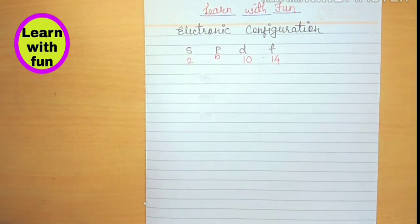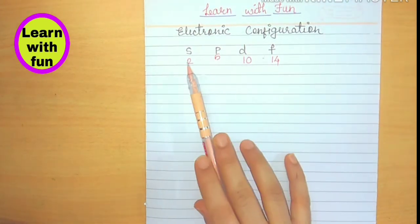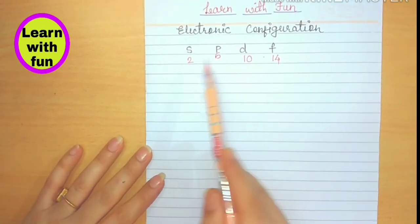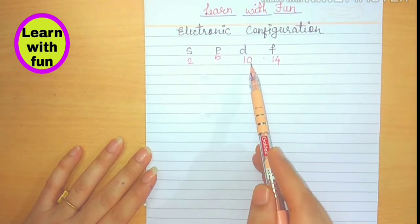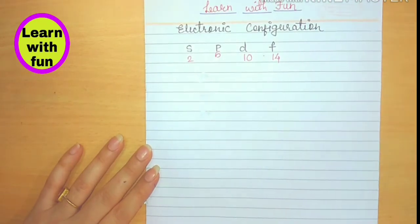Electronic configurations are a simple way of writing down the location of all of the electrons in an atom, or we can say distribution of electrons in the shells. You know that there are four subshells: S, P, D, F. S can accommodate only 2 electrons, P can accommodate 6 electrons, D can accommodate 10 electrons, and F subshell can accommodate 14 electrons.